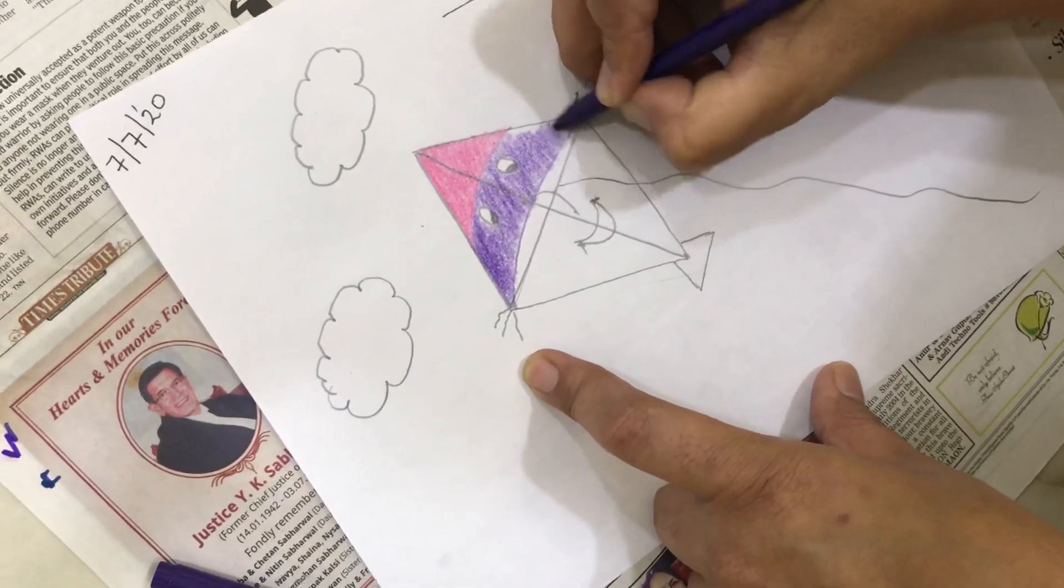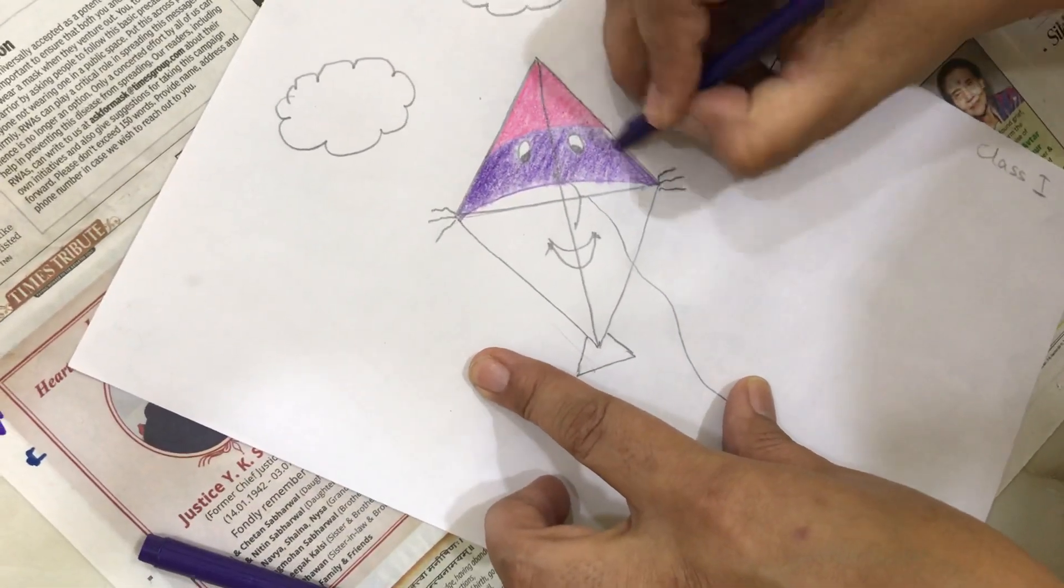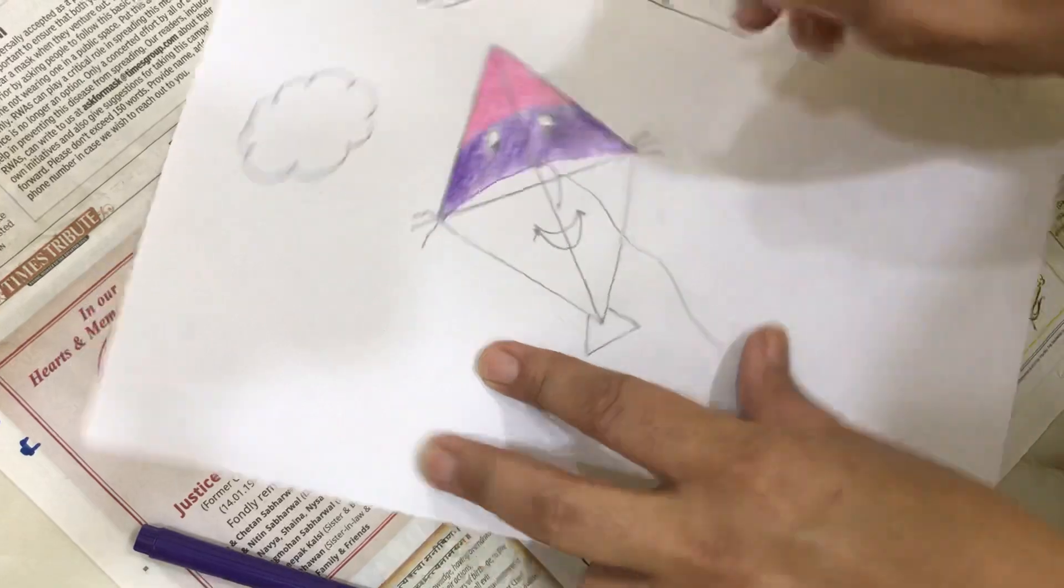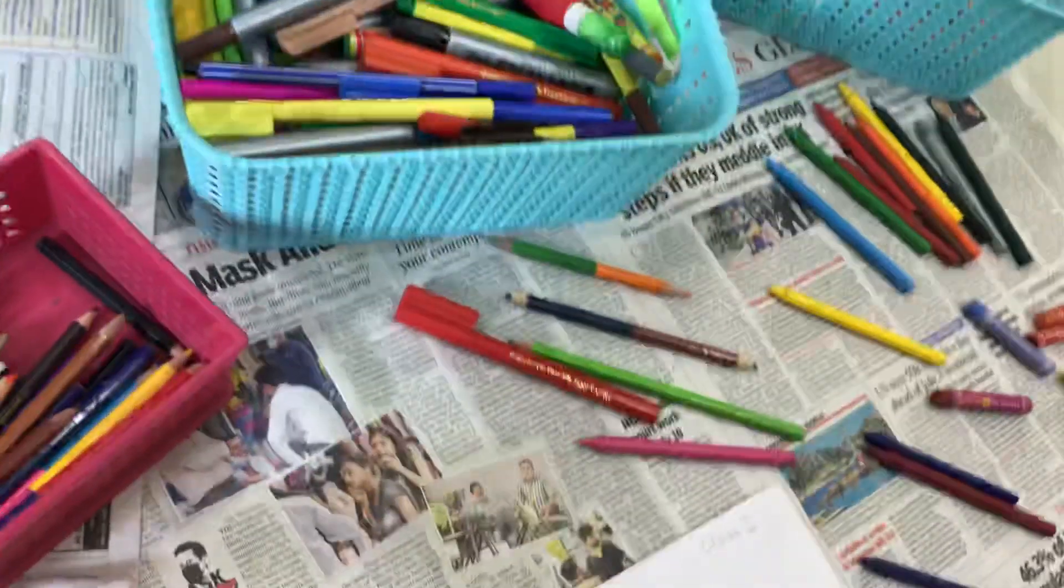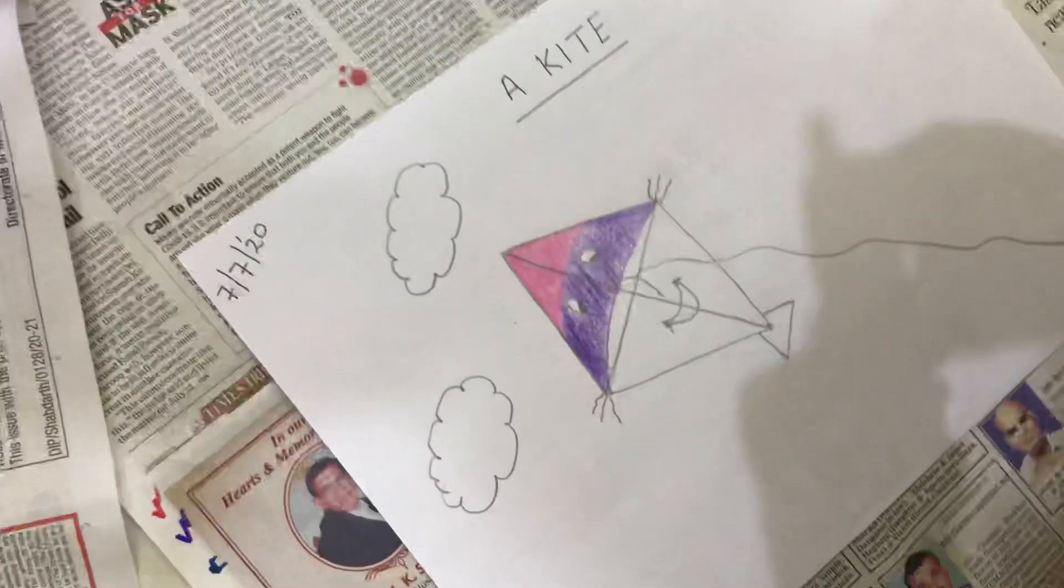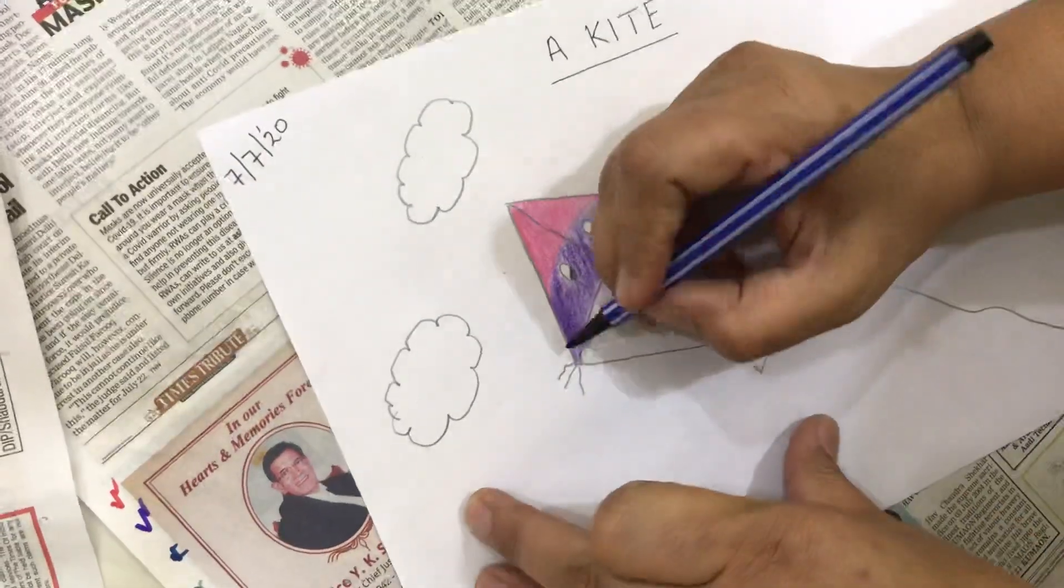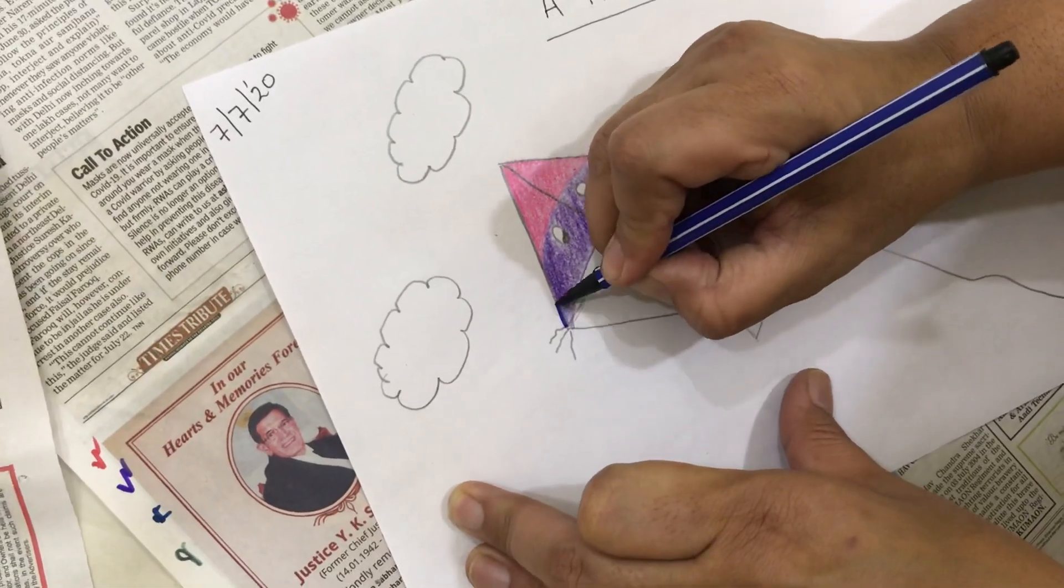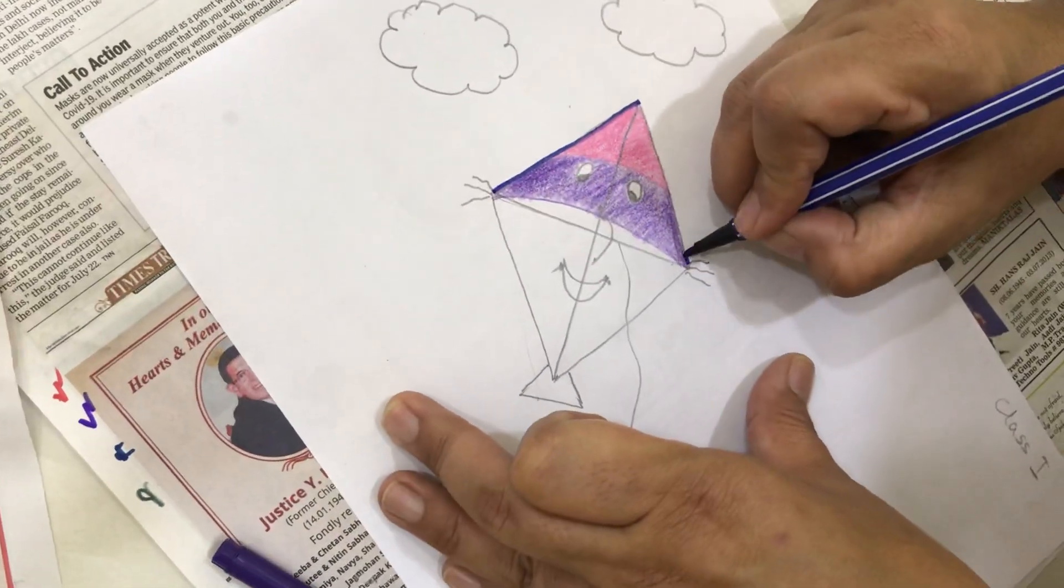And later on we can use a black sketch pen to outline the eyes and the kite, so that our sky has a beautiful kite. We can use black sketch pen or blue sketch pen to give an outline to our drawing.